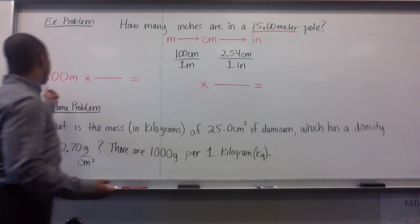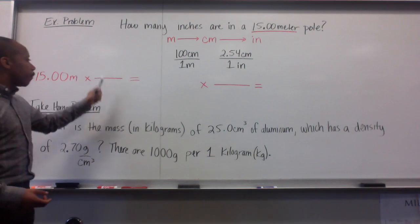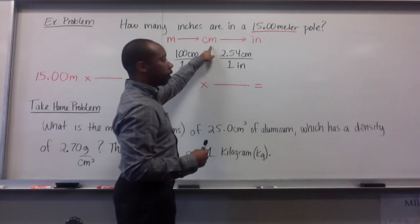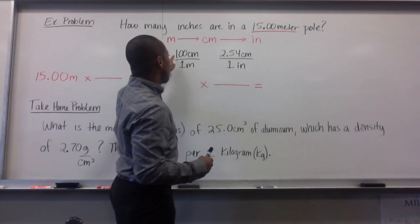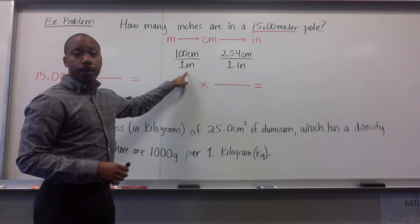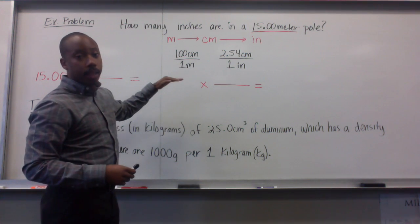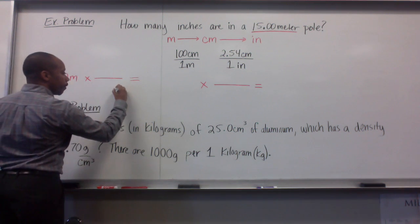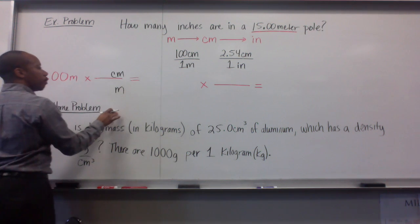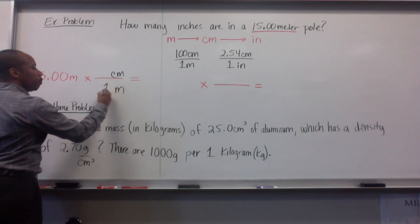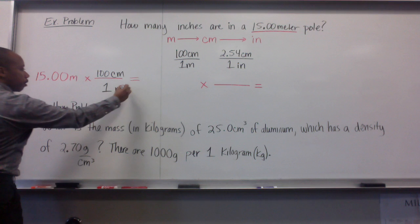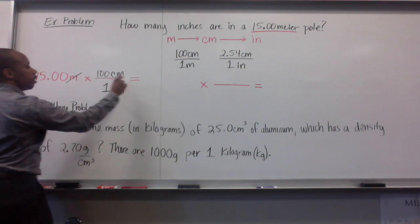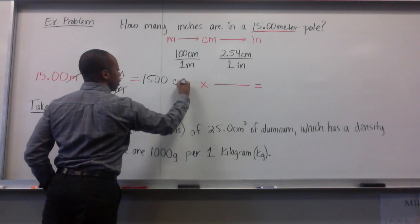We start with what's given to us, 15.00 meters. We multiply times some conversion factor that's going to relate meters to what we want to get to. We want to get to centimeters first, and then we'll go to inches. What relates to meters and centimeters is that there are 100 centimeters per one meter. You can also flip this. In one meter, there are 100 centimeters. Here our giving unit is meters. So we want to have our other giving unit down here. For every one meter, there are 100 centimeters. Our meters cross-cancel, and we have 15.00 times 100 centimeters giving you 1500 centimeters.